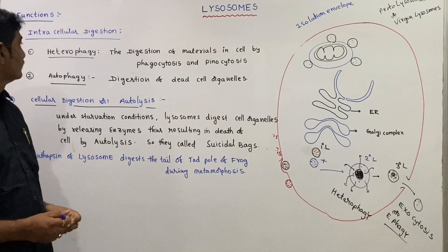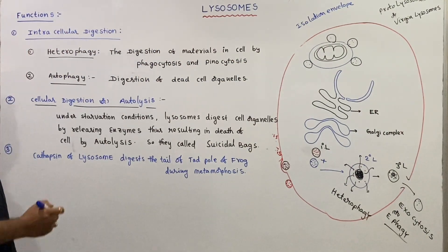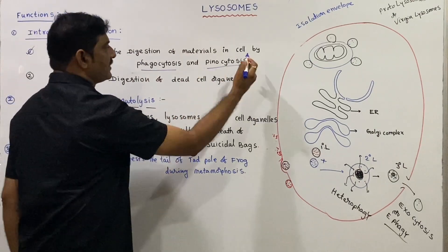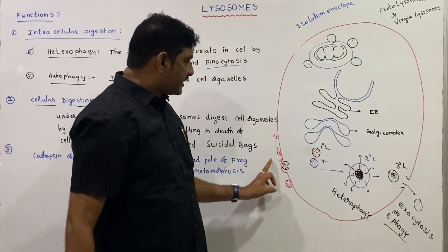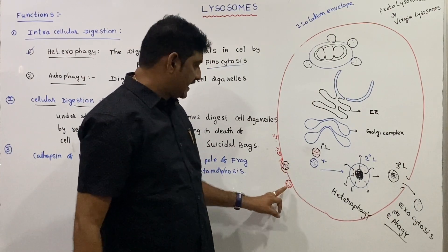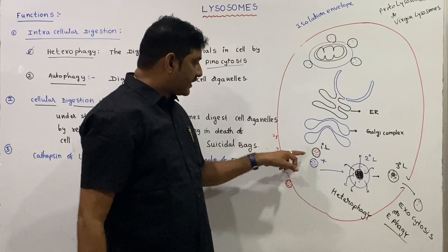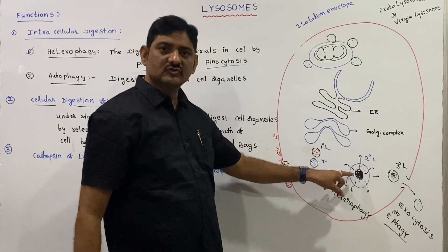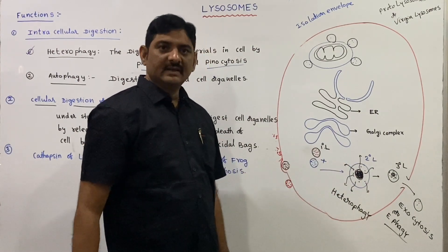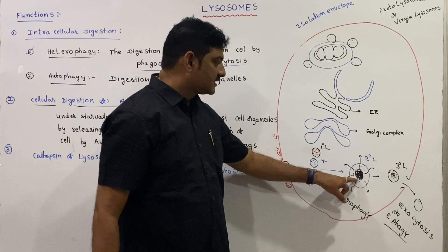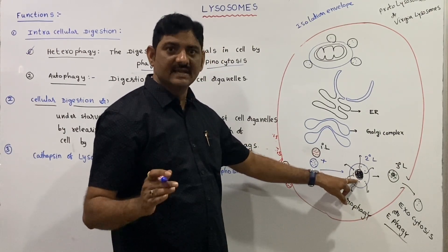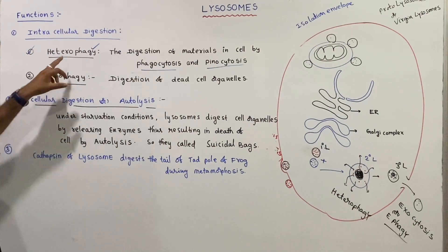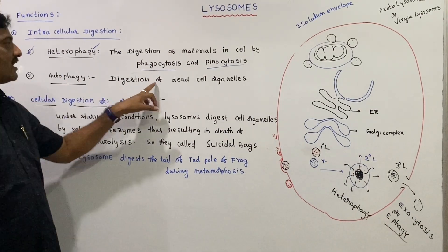The functions of lysosomes include intracellular digestion through heterophagy — the digestion of materials brought into the cell by phagocytosis and pinocytosis. The primary lysosome fuses with the phagosome to form the secondary lysosome or heterophagosome, which carries out intracellular digestion.